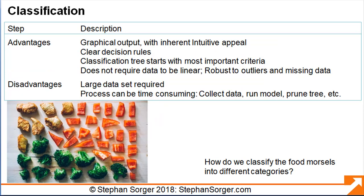Classification techniques boast several advantages. First, they provide clear decision rules, giving guidance on how to classify data. Second, classification trees show the most important classification criteria first, at the top of the tree, giving insight into which input variables are most meaningful. Third, classification algorithms tend to be fairly easy to work with, not requiring linear data and not being sensitive to outliers and missing data.